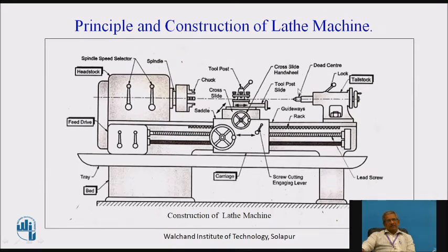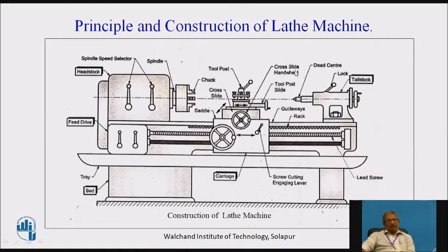Dead centers or live centers in the tailstock are used to support the workpiece. When a long workpiece is held in the chuck, during cutting it may get lifted, which could damage the machine, break the tool, and create hazards for the operator. The tailstock supports the front end of the workpiece to prevent this.